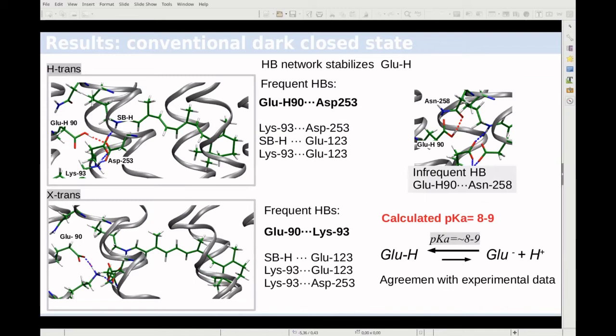In more detail, we observe that the hydrogen bond network stabilizes the protonated state. For the H-trans system shown at the top, Glu-90 interacts with the neighboring aspartic acid, and we observe very small and infrequent interaction with the asparagine 258.